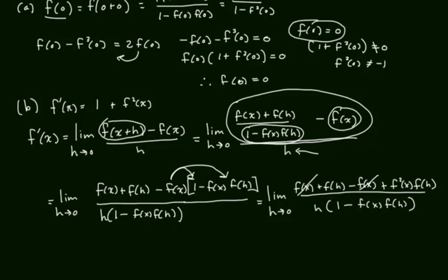And you might also be able to see, we can do this in one step here, that we can factor out of the numerator an f of h. So f of h gets factored out in the numerator, 1 plus f squared x, like that, all over h times 1 minus f of x f of h.